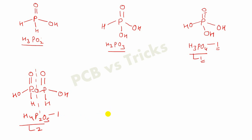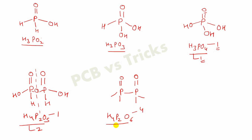Now let us see H4P2O6. Here also, you will make a single bond between two phosphorus atoms and show the three bonds of each phosphorus. Make these bonds as double bonds and fill the two respective oxygen atoms. You have four oxygen and four hydrogen remaining, which means you can make four OH groups and distribute two OH groups to each phosphorus atom. In this way, the structure of H4P2O6 is completed and the symmetry is maintained.